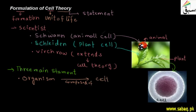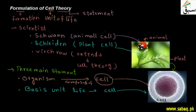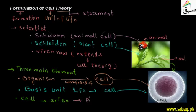The second postulate is that the cell is the basic unit of life. The third postulate states that cells arise from pre-existing cells — new cells are formed from already existing cells.